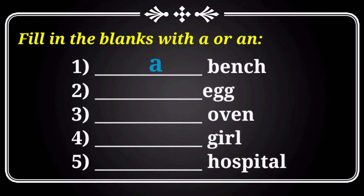Next one: blank — egg. 'Egg' begins with a vowel, so you have to use 'an'. So it changes into 'an egg'.